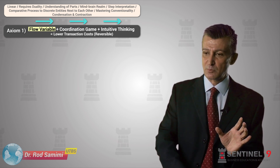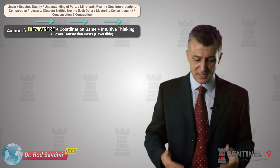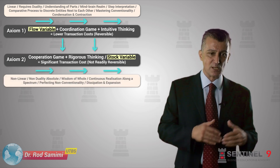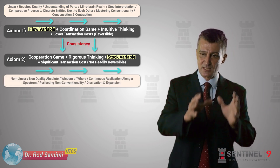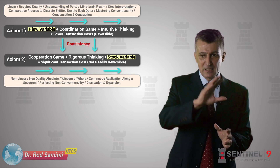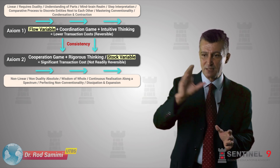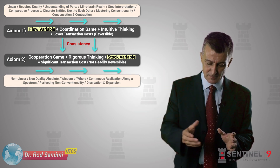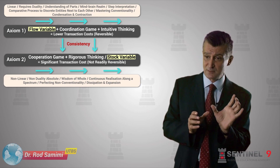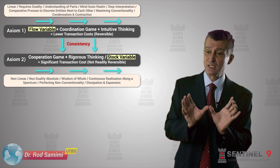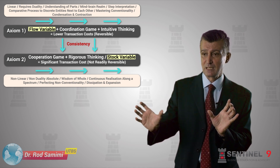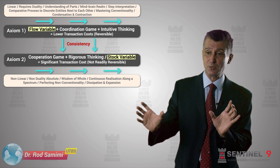Variables that provide flow. The next axiom builds on the second set of parallel definitions from those sessions. If these things iterate fast and repeatedly, we will have resolution to a cooperative game based on slow, rigorous thinking, which creates a stock variable.